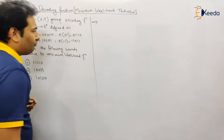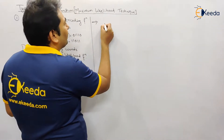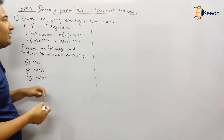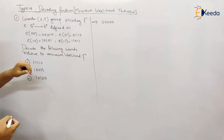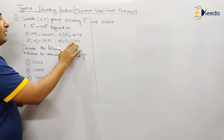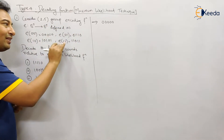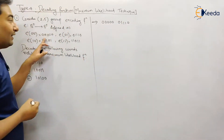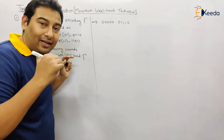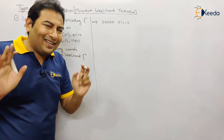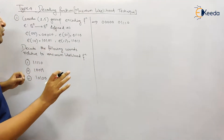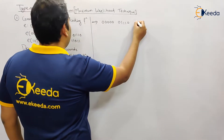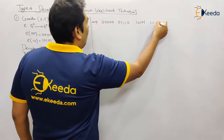First of all, you need to make the table. At the top of the table it will always start with all zeros — and since it's B⁵, it will be 5 zeros. We just need to write the encoding functions as given in the problem. If they are not given, we'd need to find them by the procedure from the previous video. The given codewords are: 00000, 01110, 10101, and 11011.